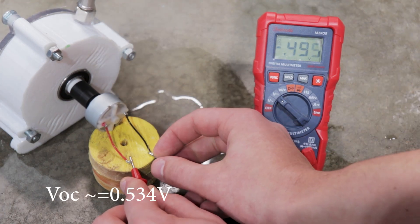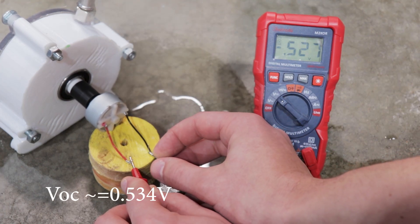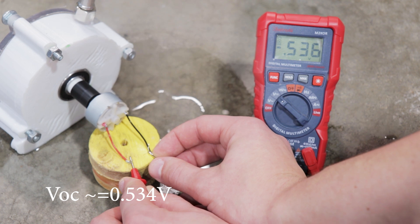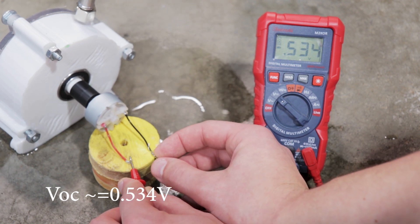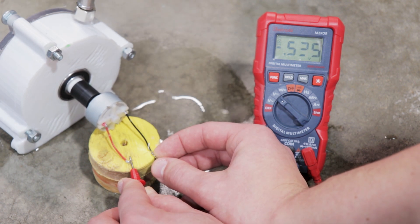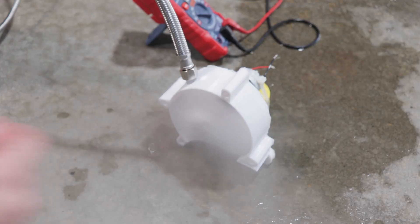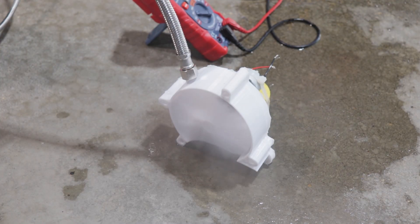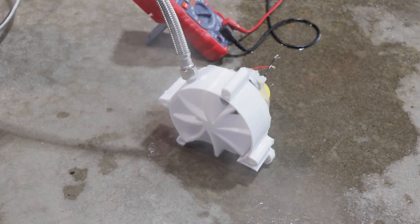After I was done with the ammeter, I switched over to voltage and collected some information on the open circuit voltage. Once I collected my data, it was time to shut the prototype down and head back to the drawing board.